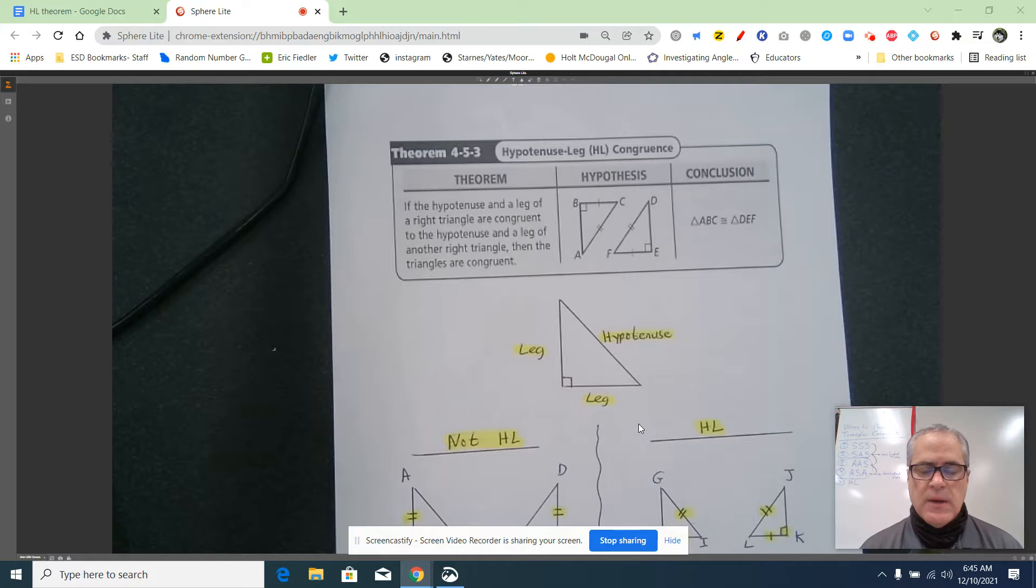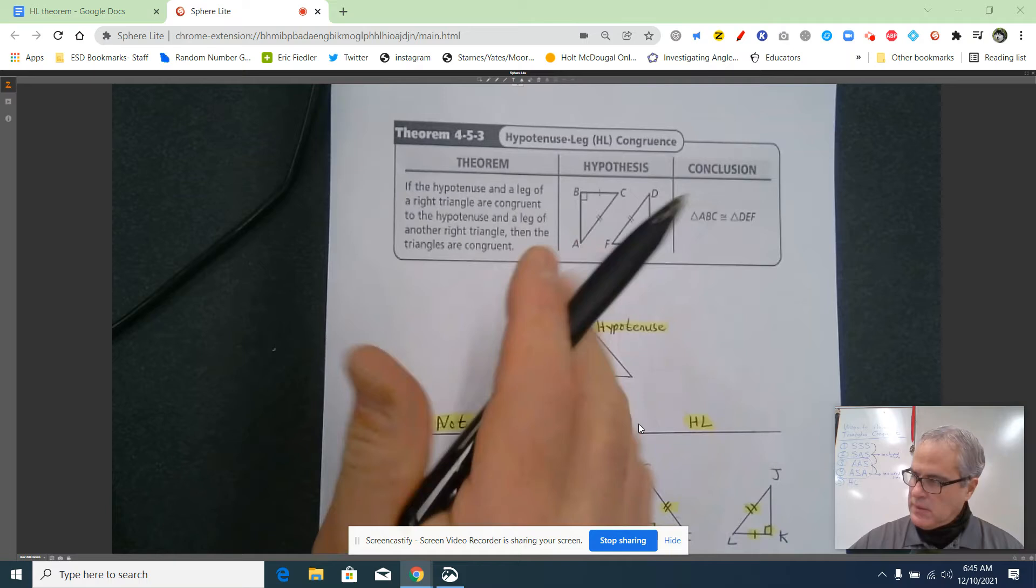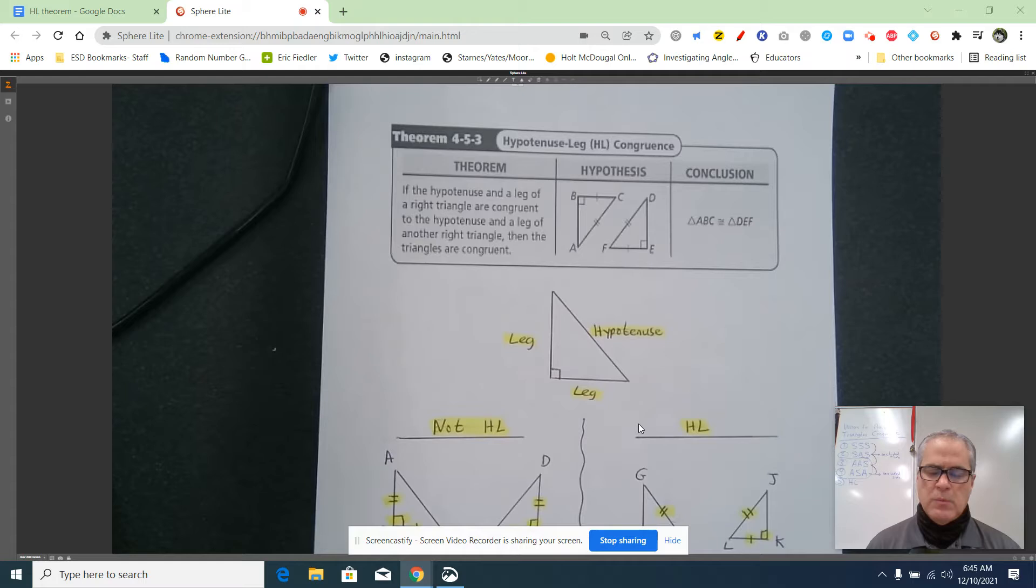Here it is: If the hypotenuse and a leg of a right triangle are congruent to the hypotenuse and leg of another right triangle, then the triangles are congruent. Before we go any further, to understand this theorem,